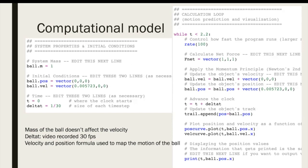And then the time, initial time is zero and delta t to be one divided by 30 because the video is recorded at 30 frames per second. And on the right hand side, here's the update velocity and the position formula they are used to map the motion of the ball.